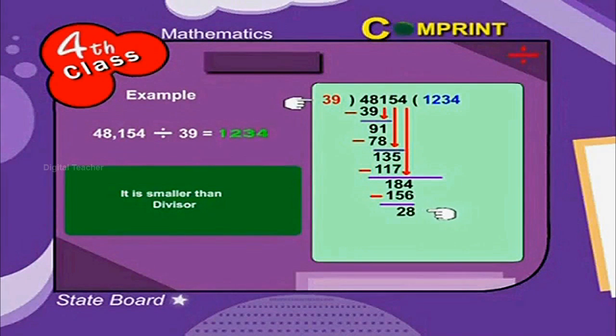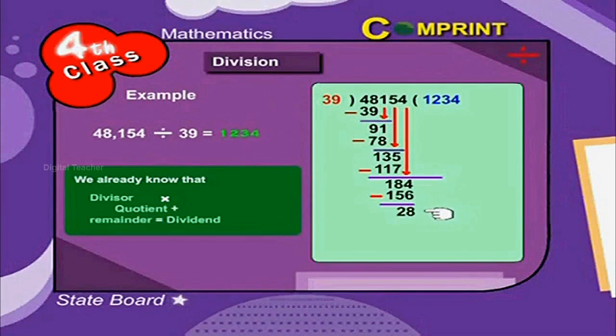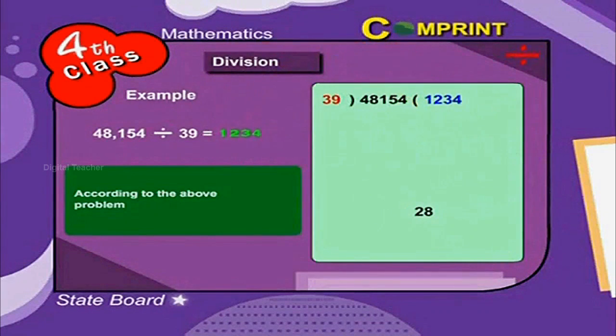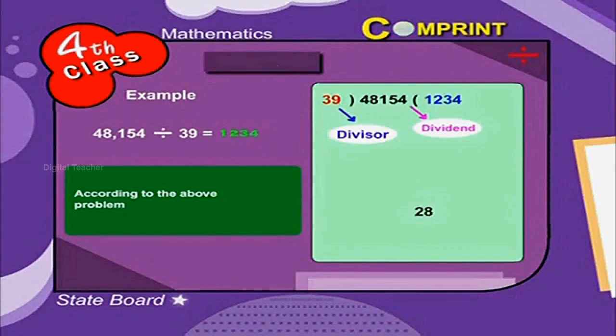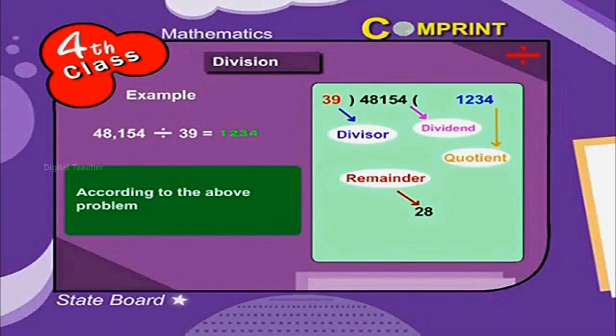It is smaller than the divisor. We already know that divisor into quotient plus remainder is equal to dividend. According to the above problem, 48,154 is called the dividend, 39 is called the divisor, 1,234 is the quotient, and 28 is the remainder.